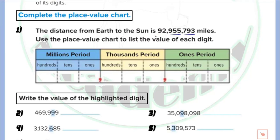We separate the periods and read each one. The first period from the left is the millions period, so we have 92 million. Then we read the second period, which is 955,000. After that we read the third period, which is 793. So the full number reads 92 million, 955,793.